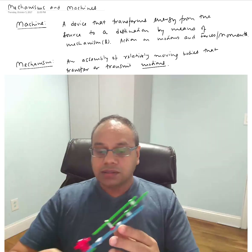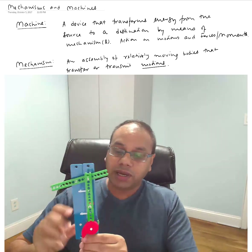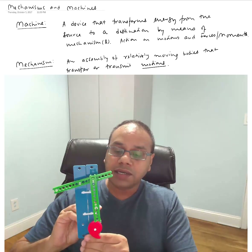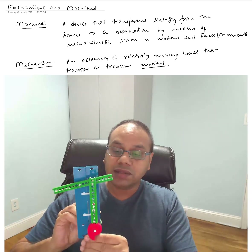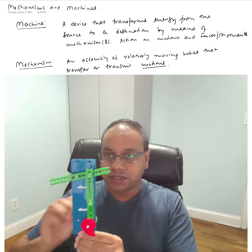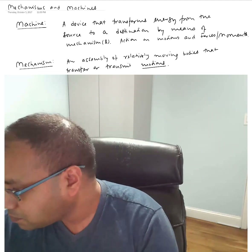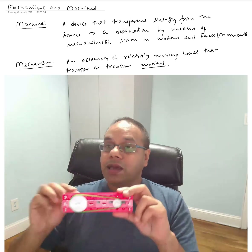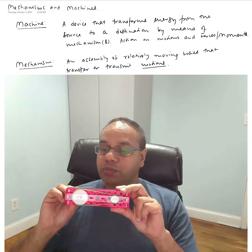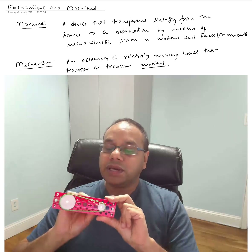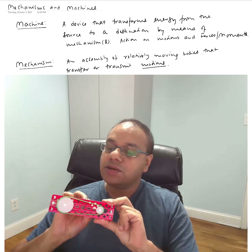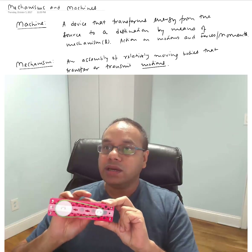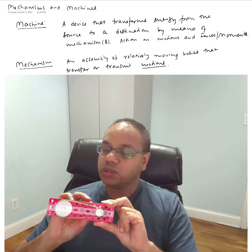Here is another mechanism — what we call a cam mechanism. As I rotate the cam, you can see the green bar going up and down. This is an example of a cam mechanism. Here is a timing belt over pulley mechanism. As I rotate one of these gears, you can see that the other pulley or gear is rotating as well.